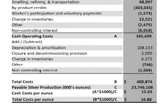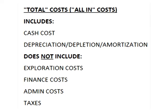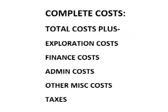Pan Am's total cost in 2012 was $16.88 per ounce, which includes cash cost plus depreciation, depletion, and amortization costs.